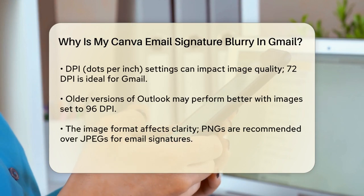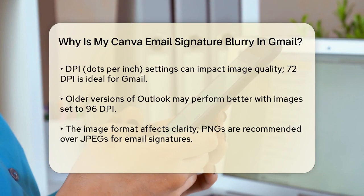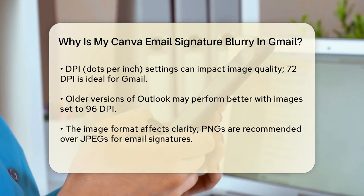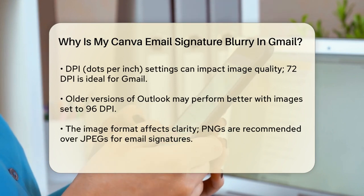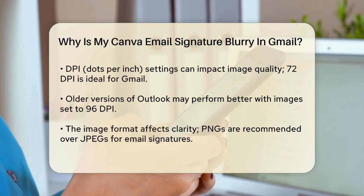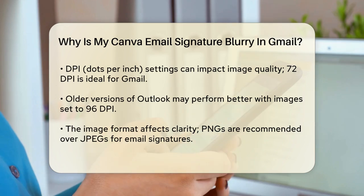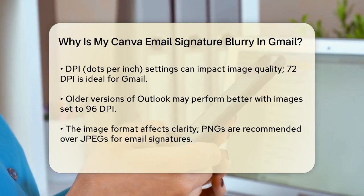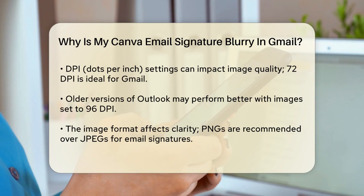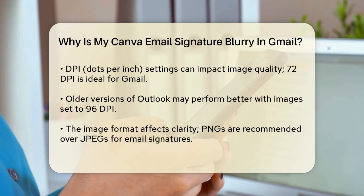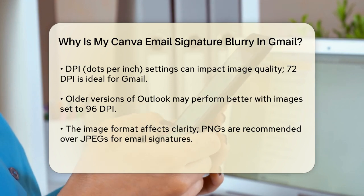Another key point is the DPI — dots per inch — of your image. Most email clients, including Gmail, work best with images set to 72 DPI. However, older versions of Outlook prefer 96 DPI. Ensuring your image is set to the correct DPI can make a big difference in how clear it looks.